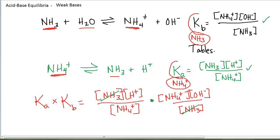I'm left with the Ka times the Kb for this pair is equal to H+ times OH-. Well, recall H+ times OH- is Kw. And this is true for any acid-base conjugate pair. The Ka times the Kb for that acid-base conjugate pair is equal to the Kw, the 1 times 10 to the minus 14.